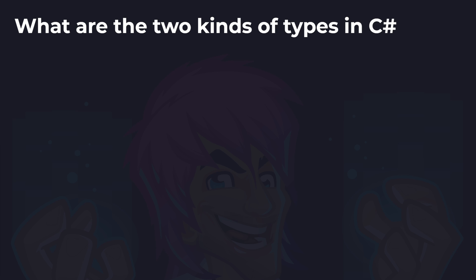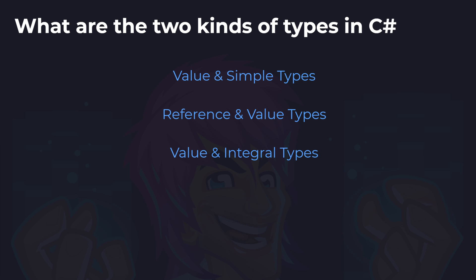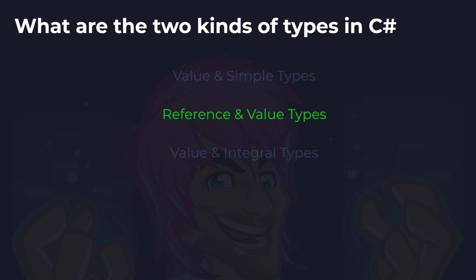The first question is: what are the two kinds of types in C#? Is it value and simple types, reference and value types, or value and integral types? This was covered at the start of the video. And the answer is reference and value types.